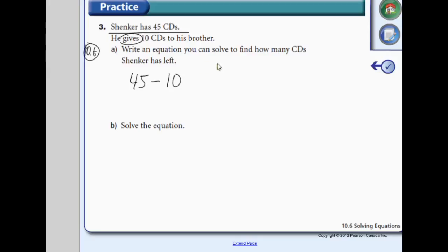Write an equation you can solve to find how many CDs Shankar has left. So 45 minus 10 equals x. x would be the number of CDs, so x equals number of CDs left. You've always got to actually have a variable here. This is called your variable, just as a reminder.